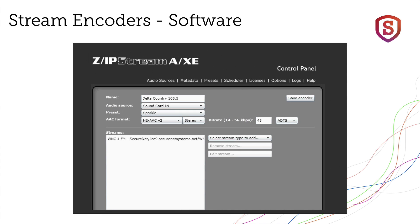Even the most basic Zipstream encoder includes MP3 and a variety of AAC family codecs. It can also create stream types supporting the most popular stream servers, including Shoutcast, Icecast, Wowza, and Adobe Flash. Metadata filtering and ingest is fully supported, and so is scheduling.